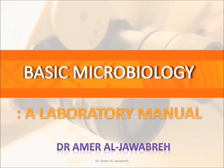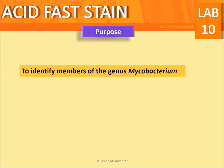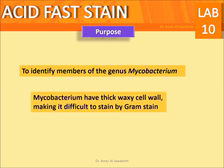Basic Microbiology: A Laboratory Manual. Acid Fast Stain. Purpose: To identify members of the genus Mycobacterium. Mycobacterium have a thick waxy cell wall, making it difficult to stain by Gram stain. Few parasites are also acid fast.